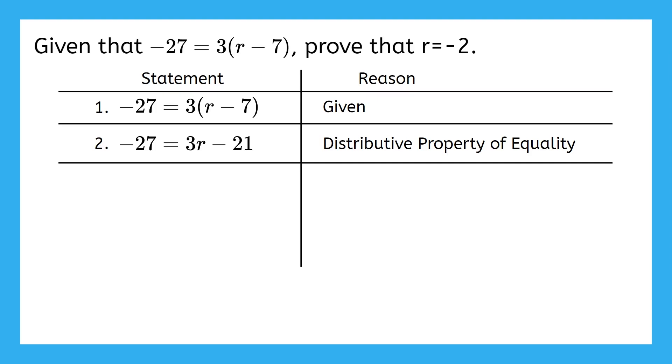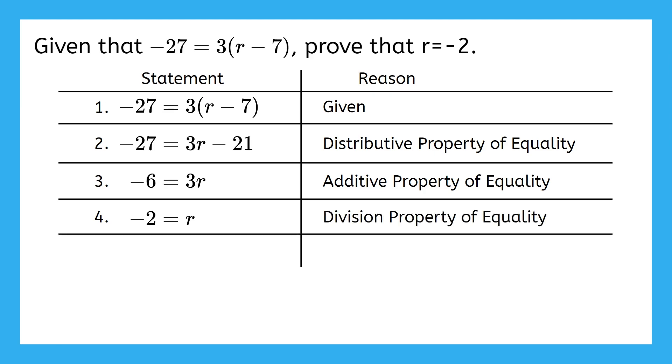Next, I would add 21 to both sides to get negative 6 equals 3r. Since I added to both sides, that's the additive property of equality. Next I'd divide both sides by 3 to get negative 2 equals r. And since I divided on both sides, my reason here is the division property of equality.